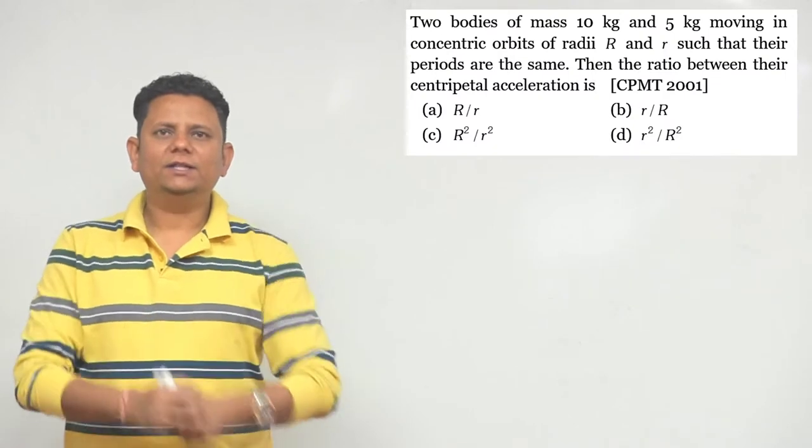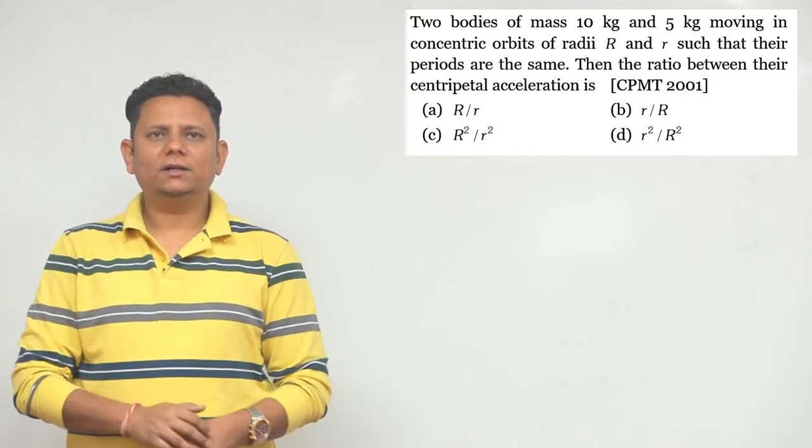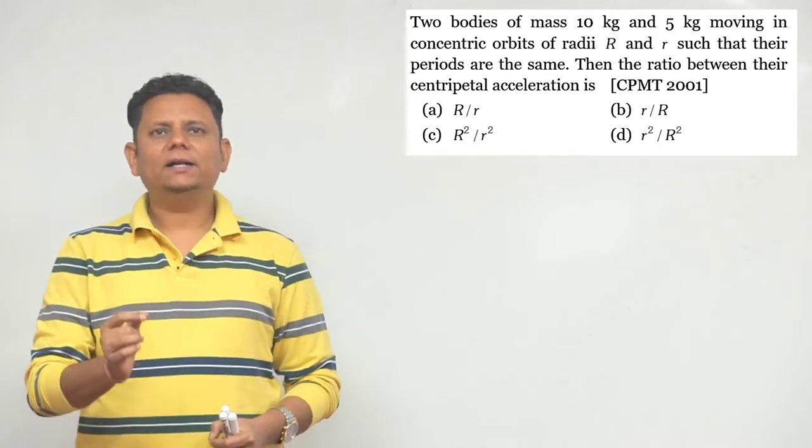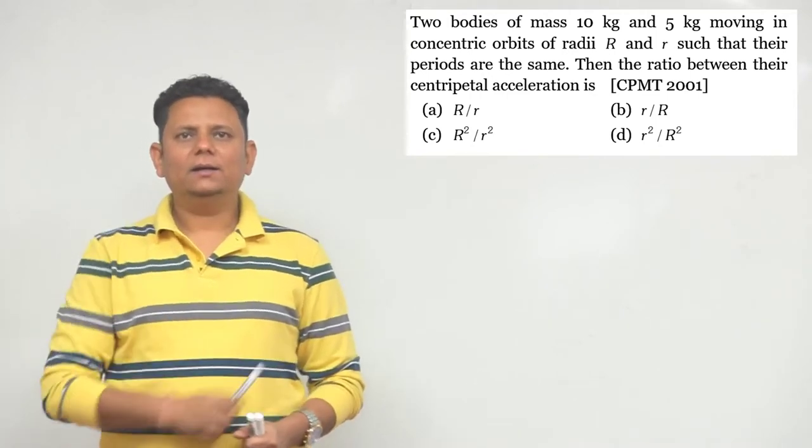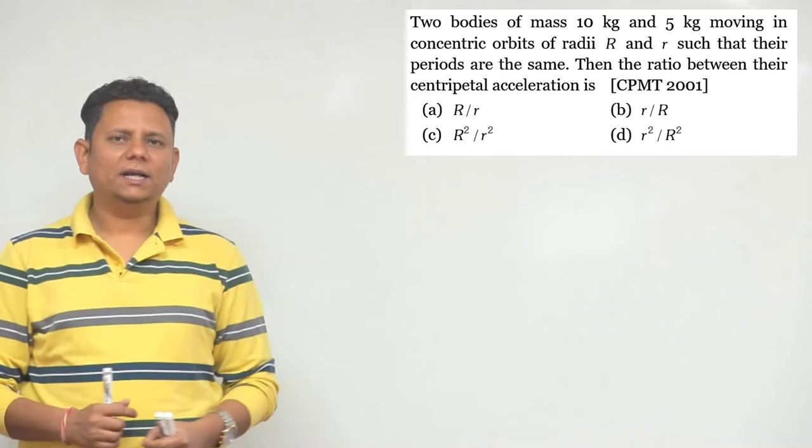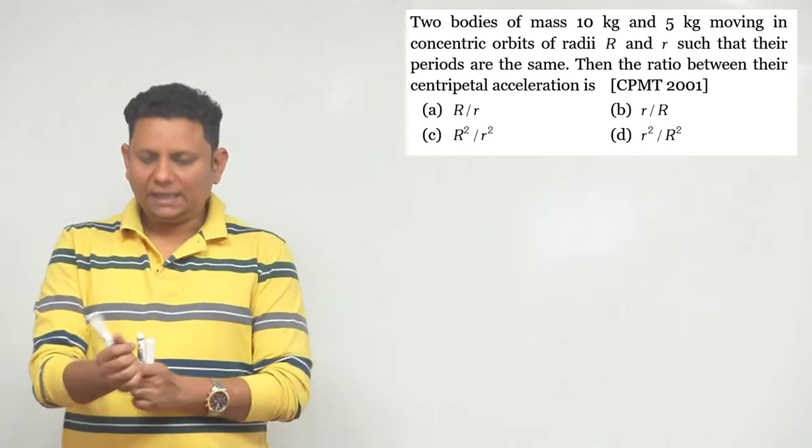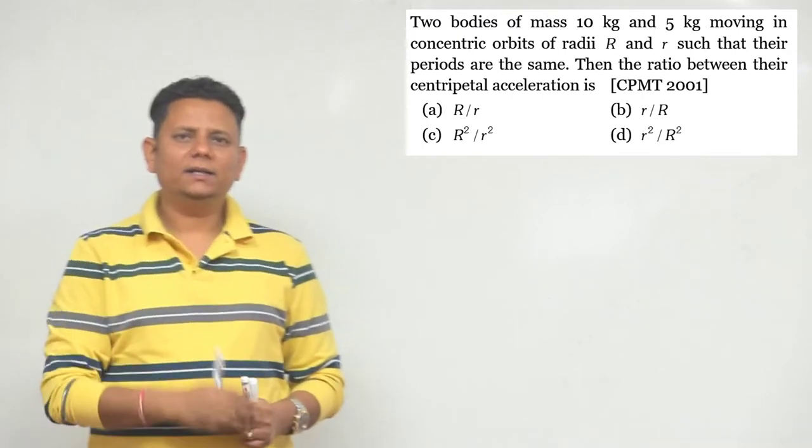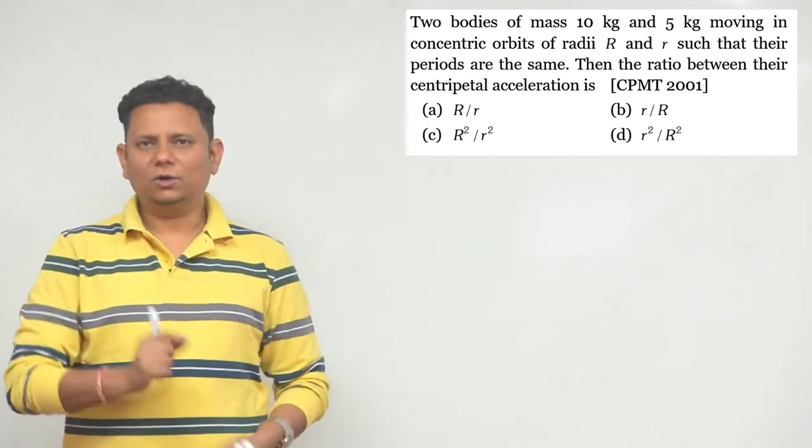Next question: Two bodies of mass 10 kg and 5 kg moving in concentric orbits of radii capital R and small r such that their time periods are the same. Then the ratio between their centripetal acceleration will be. We have two particles, 5 kg and 10 kg, which are in concentric circles of radii capital R and small r.